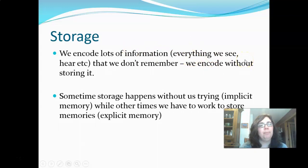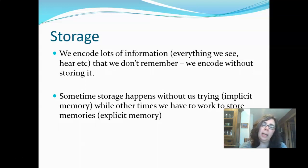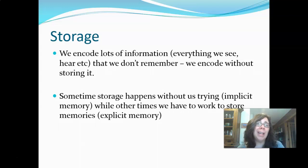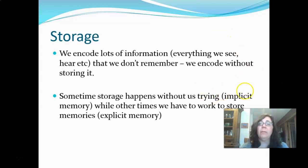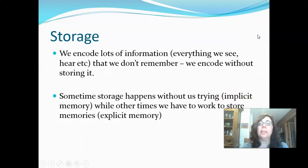The next process is storage — the equivalent of hitting save on your computer. We encode lots of information, but only some of it gets saved. As we talked about in the last class, sometimes storage happens without us trying — that's implicit memory. You may know song lyrics you never tried to learn and aren't even aware you know until you find yourself singing along. Other times, like with academic information, we have to work really hard to store information — that's more explicit.